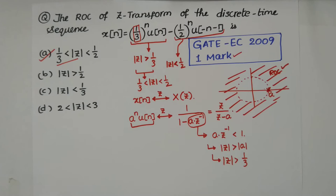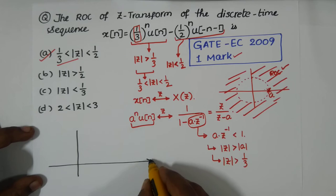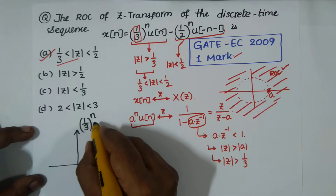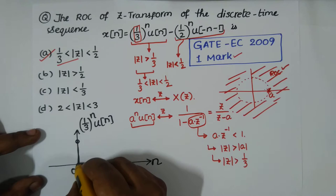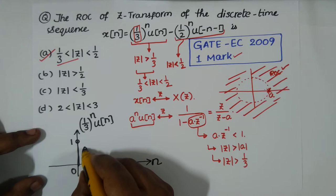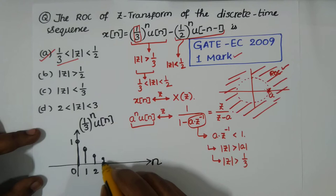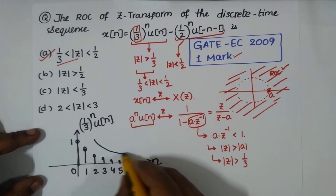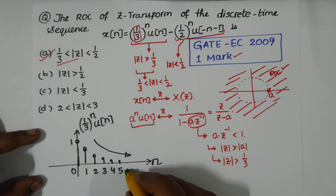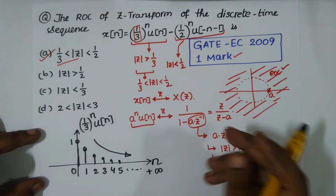For the anti-causal sequence, let's first plot (1/3)^n u[n] to visualize it. At n=0 it equals 1, at n=1 it is 1/3, at n=2 it is 1/9, and so on. This gives a decaying causal sequence that continues to infinity — a typical right-sided signal.